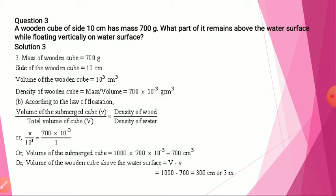Third question: a wooden cube of side 10 centimeters has mass 700 grams. What part of it remains above the water surface while floating vertically? From this we can find the volume of the submerged cube, and by subtracting that from the total we can find the volume of the body floating above the surface. Mass is given, side of wood is given, so we can find the volume of the wooden cube — that is 10 cubed.